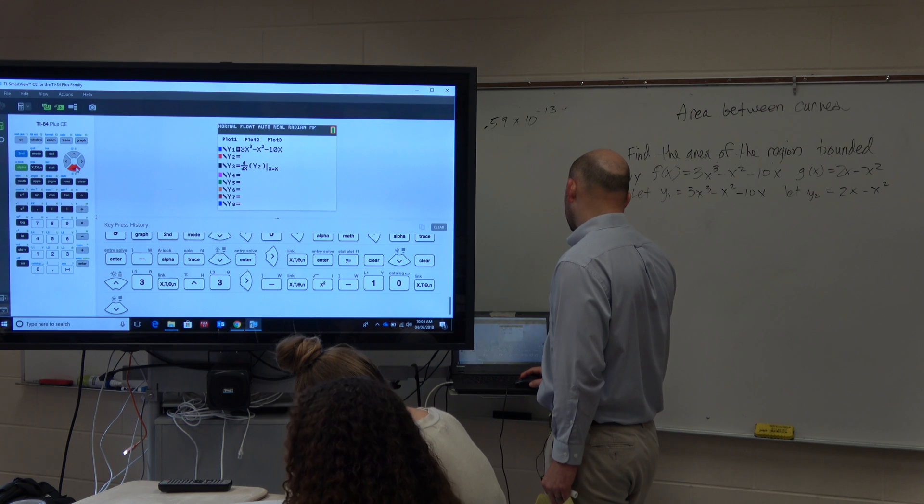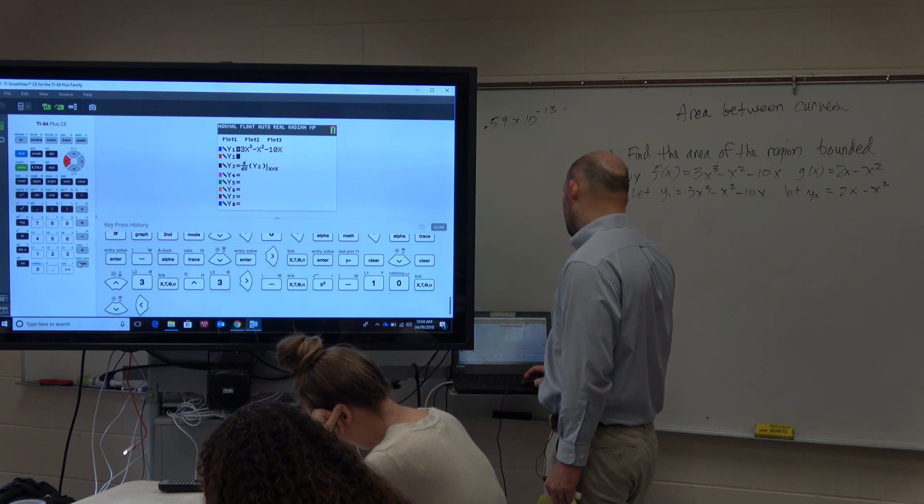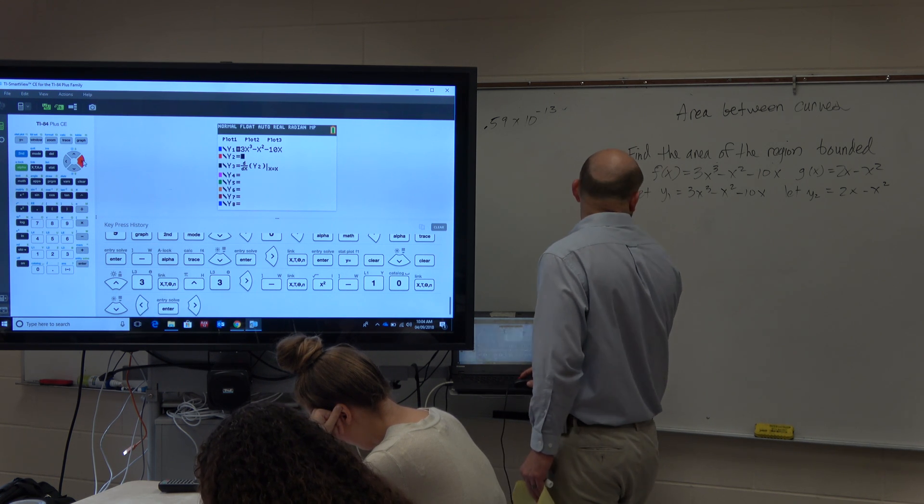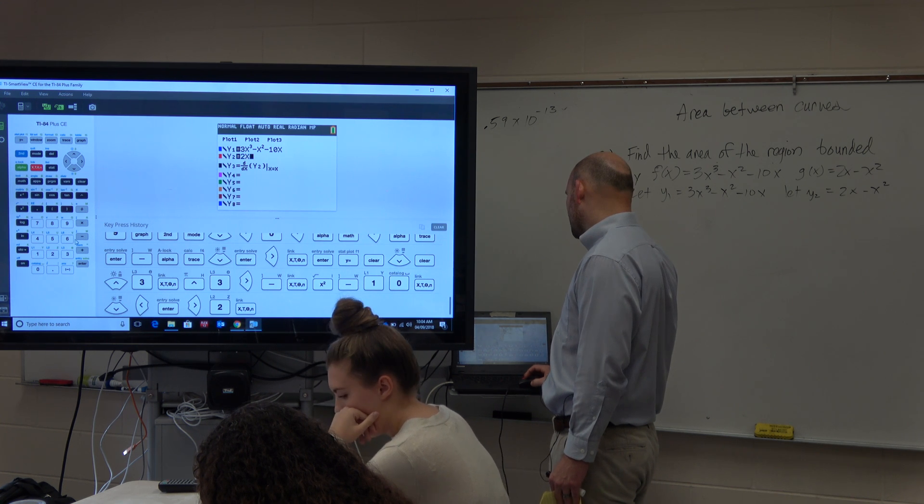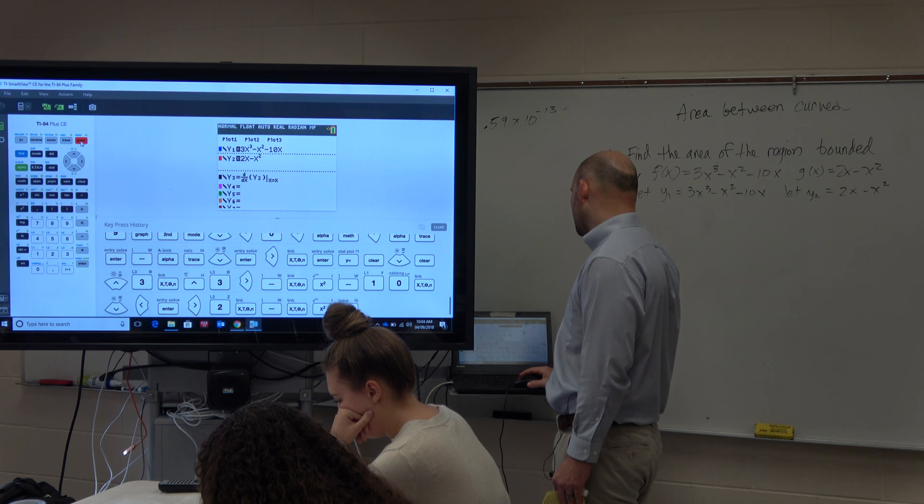Just because we were able to use our calculator, we still have to show our work as far as what we're setting up into the calculator. So this is 2x minus x squared. Alright, so I go ahead and graph this.